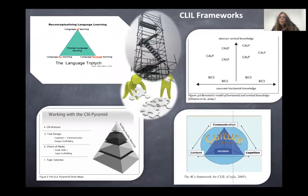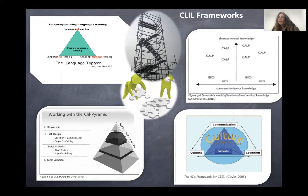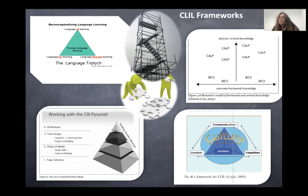Here are some of the main frameworks for CLIL. First of all, the four Cs framework by Coyle: content, which is the subject; then we have communication, so the speaking but also writing skills, all the communicative competence. Then we have culture, which is the background of every activity, and then cognition, so the thinking skills that we activate when we assign our students CLIL tasks.